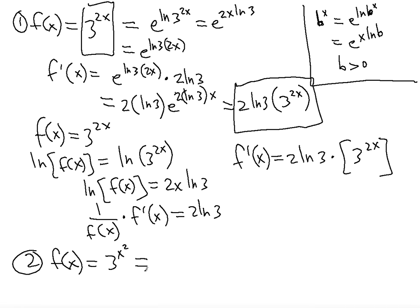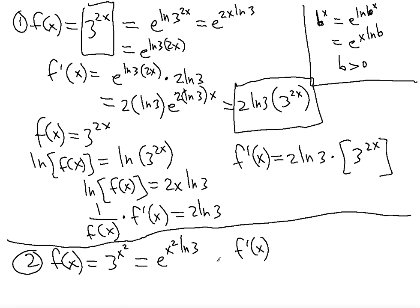So now for 3 to the x squared: the b is 3, so it can be written as e to the x squared ln 3, where x is substituted for x squared. The f′(x) is going to be equal to e to the ln 3 times x squared, multiplied by the derivative of the power, and the derivative of the power will be 2x times ln 3.